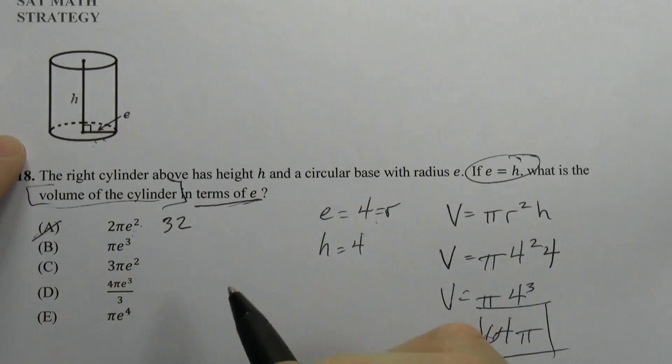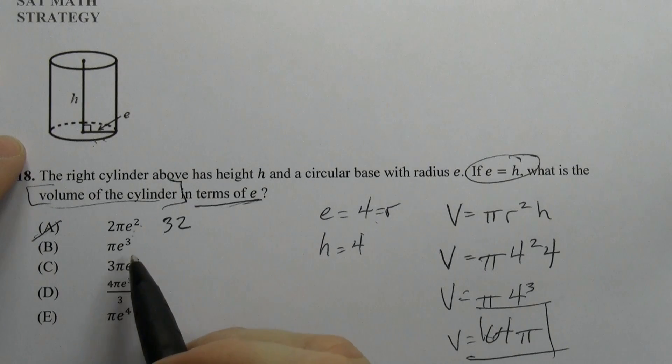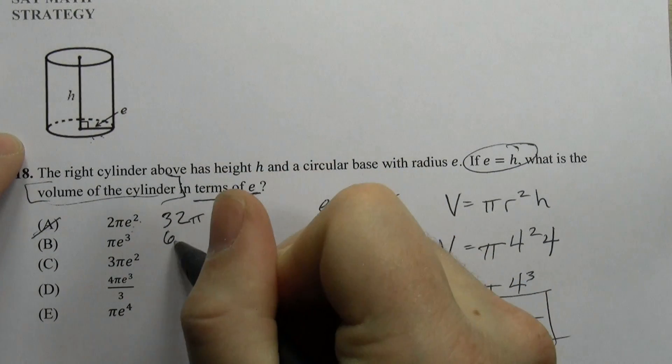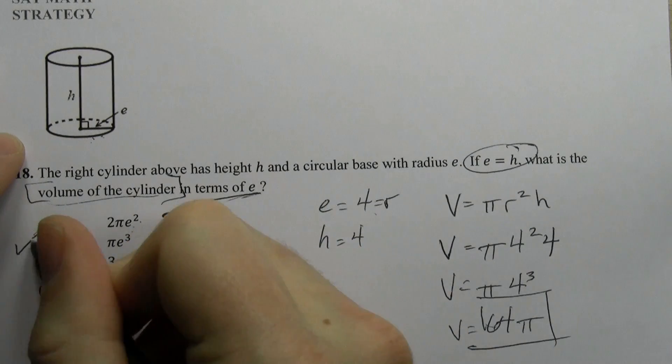It looks good, though. π times 4³ is 64π. That matches. Again, we don't stop.